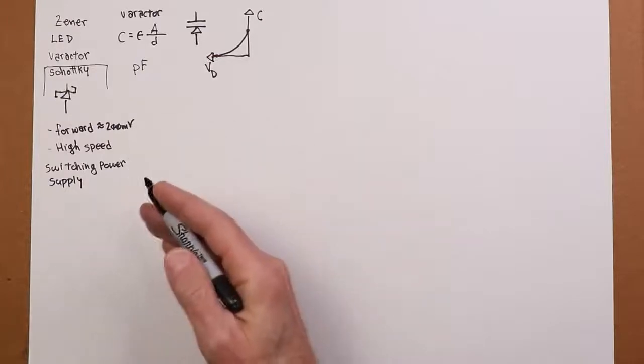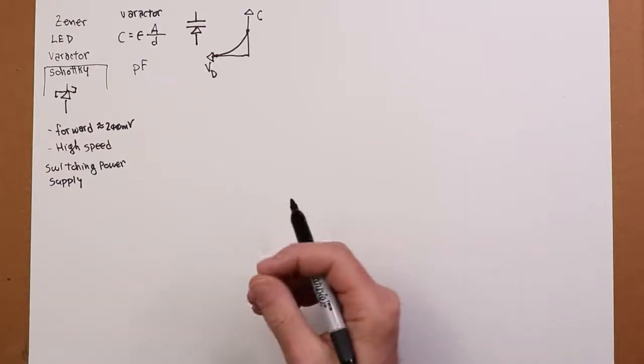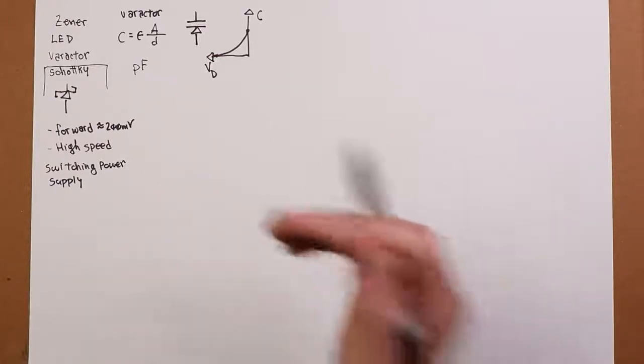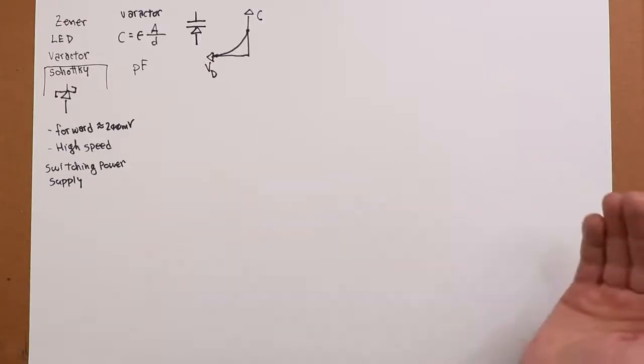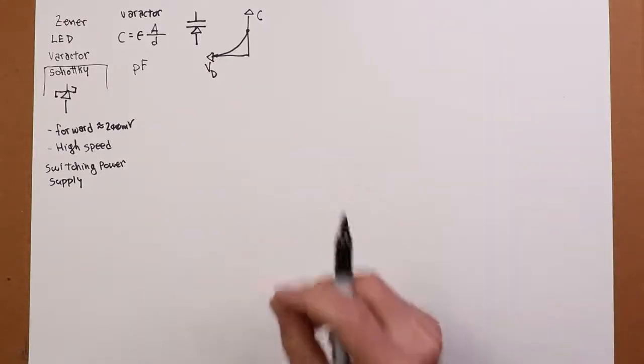So you might find that a tenfold change in the reverse bias voltage might give you a three to four change in capacitance. And the values for these are small. We're usually talking picofarads. So you might find a varactor that goes from 10 picofarads to 50 picofarads, or 75 picofarads to 200 picofarads. You're not going to find microfarads for these things.